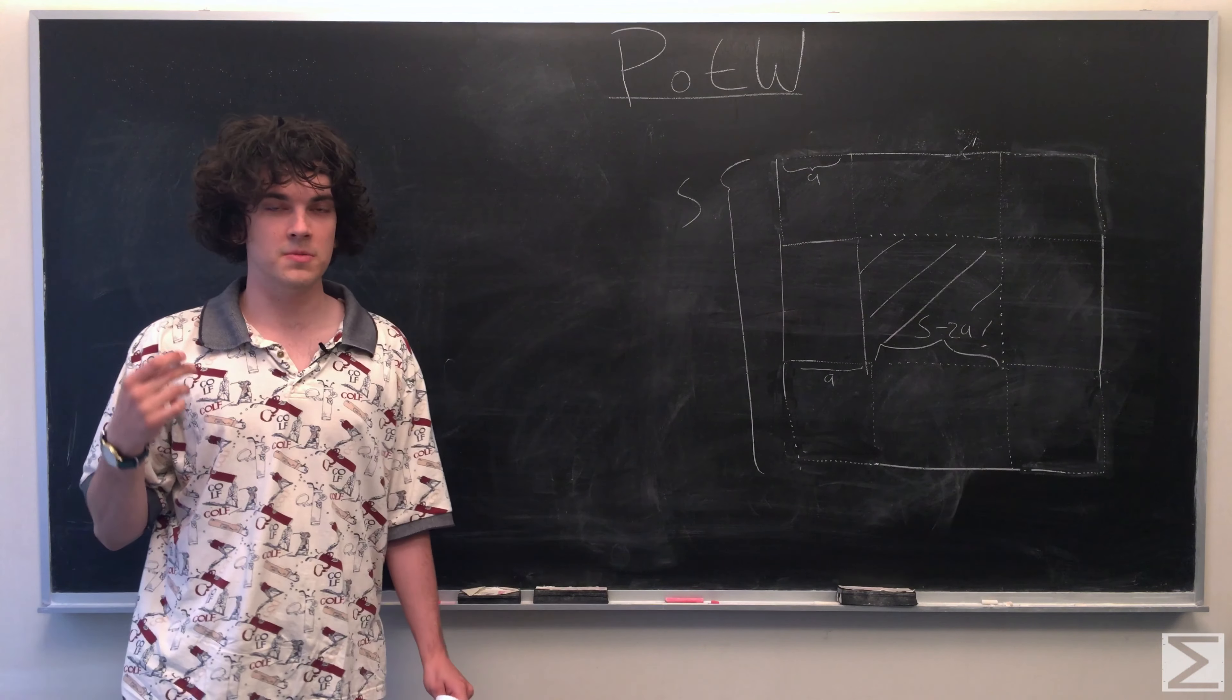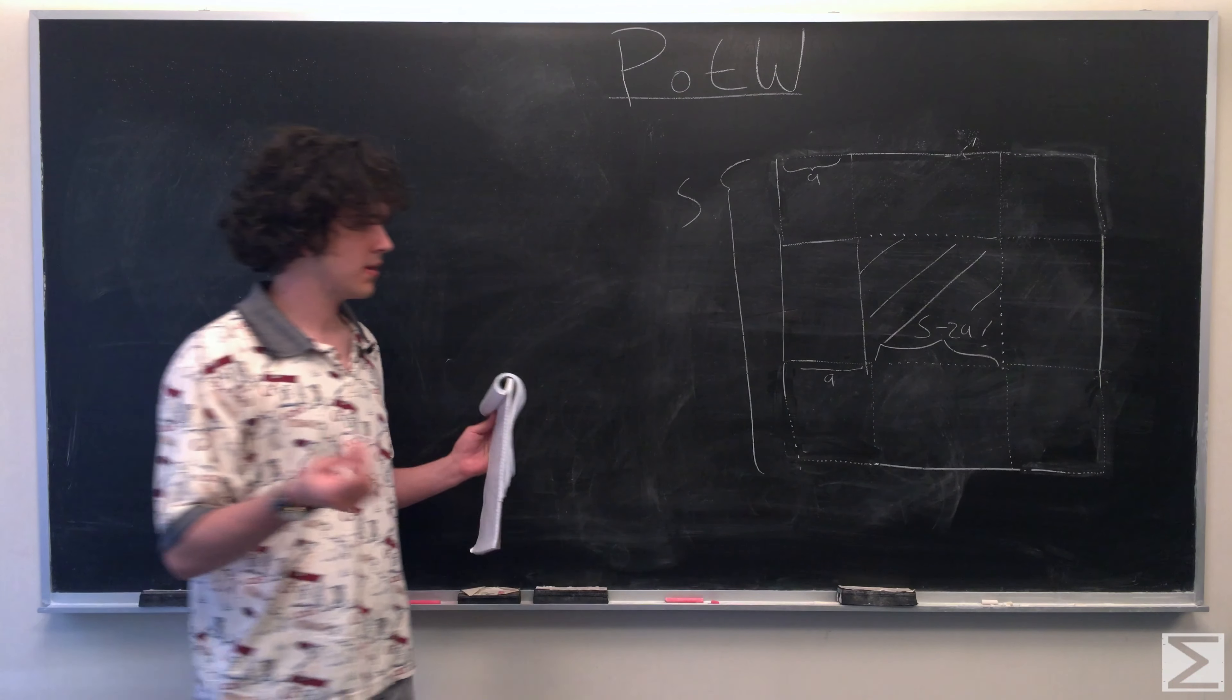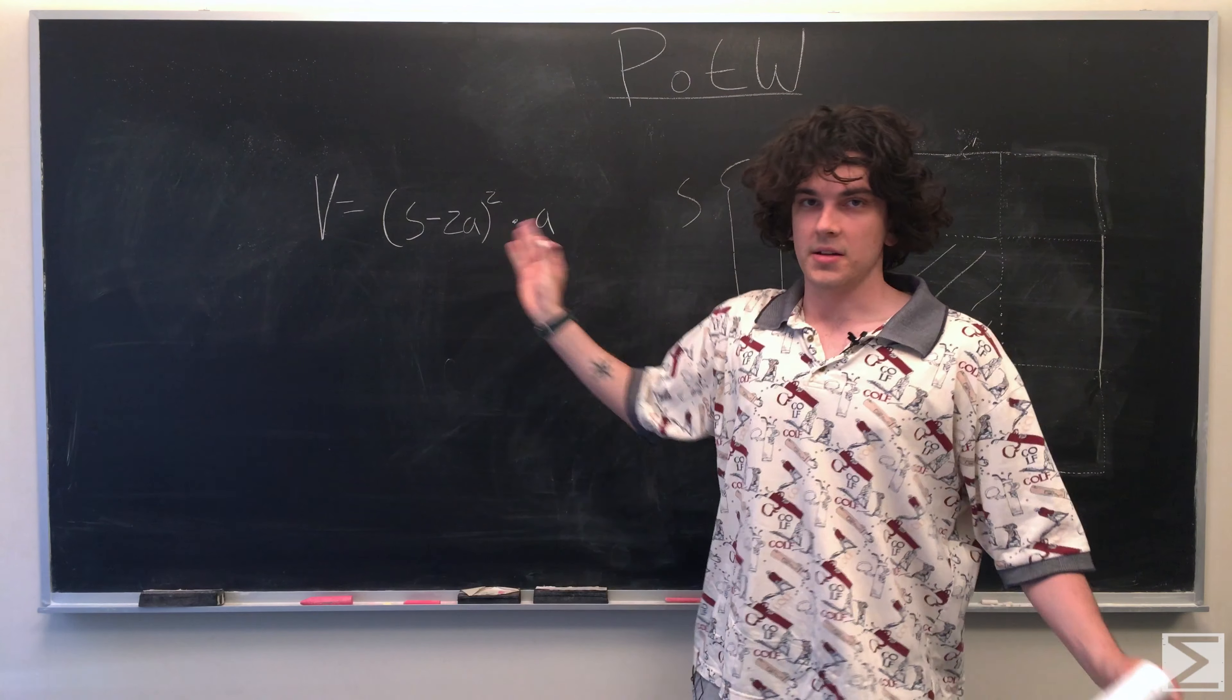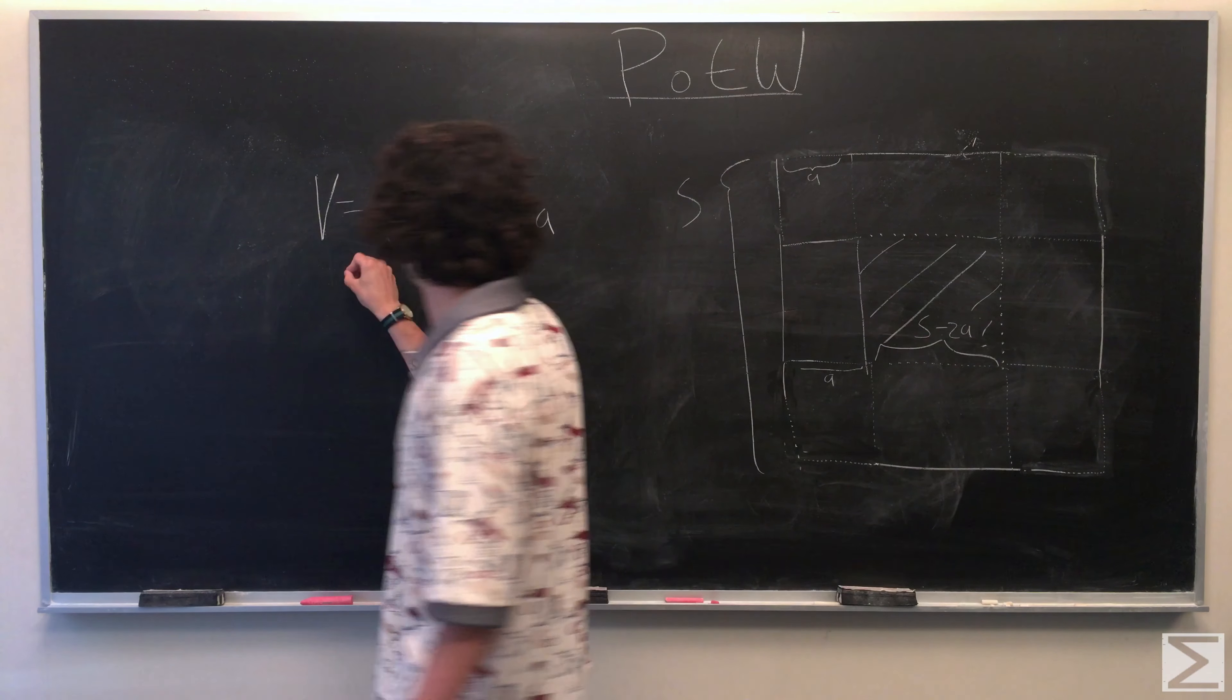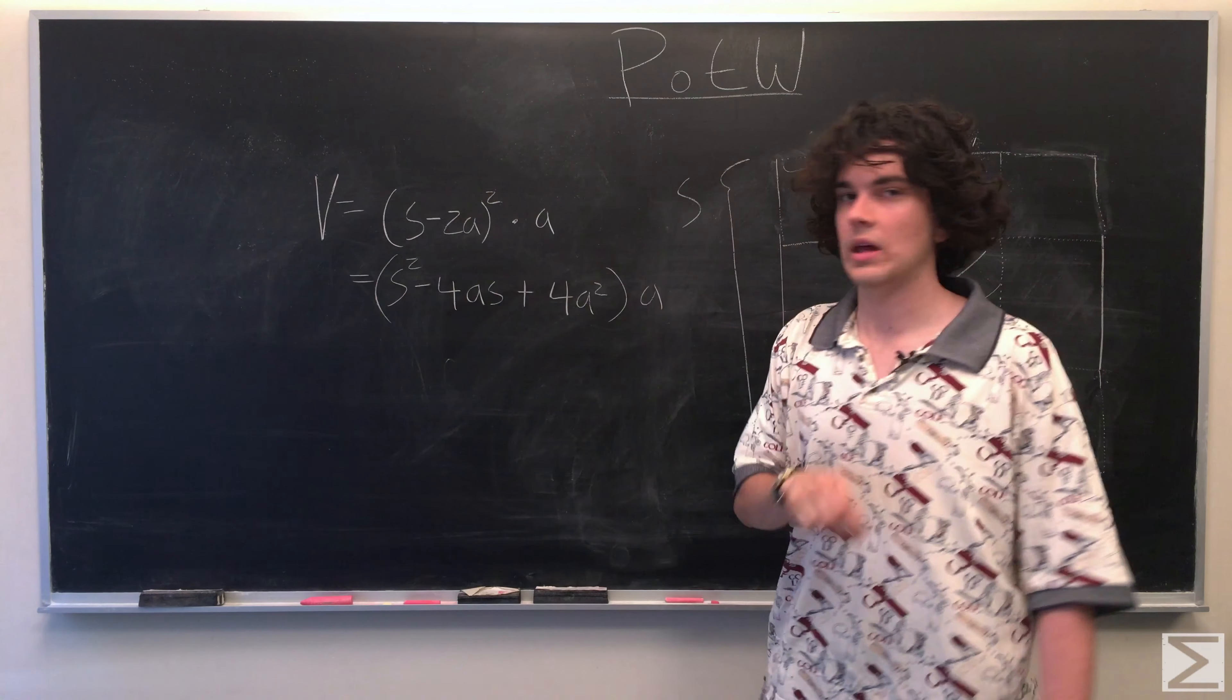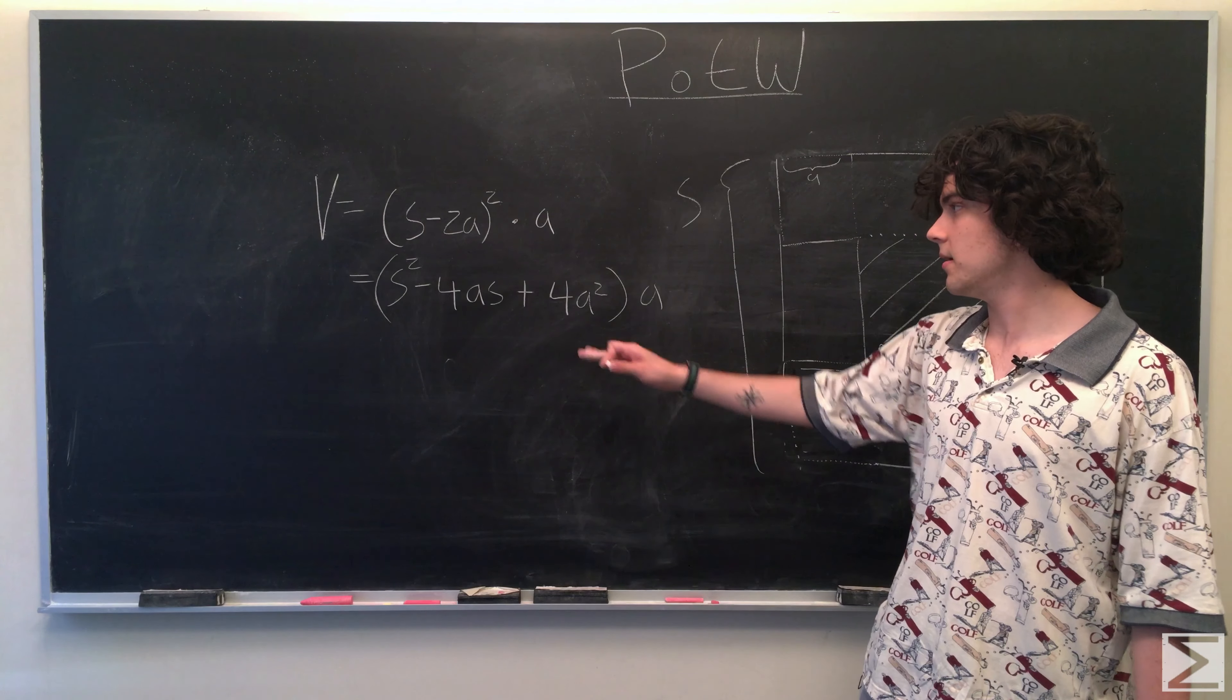So the volume is going to be S minus 2A whole squared times the height, which is A. Then expanding S minus 2A whole squared, and then of course distributing this A across this quadratic.